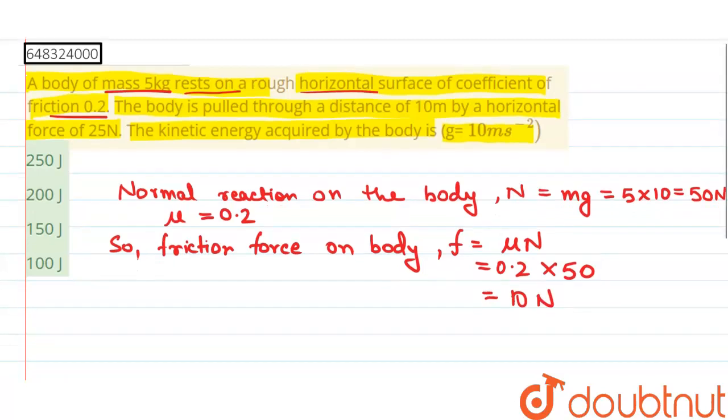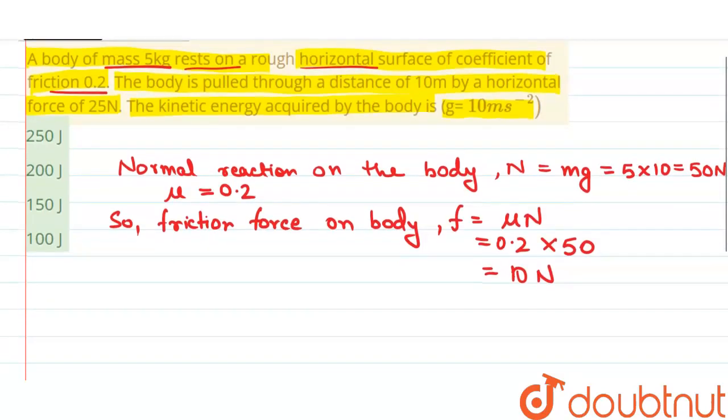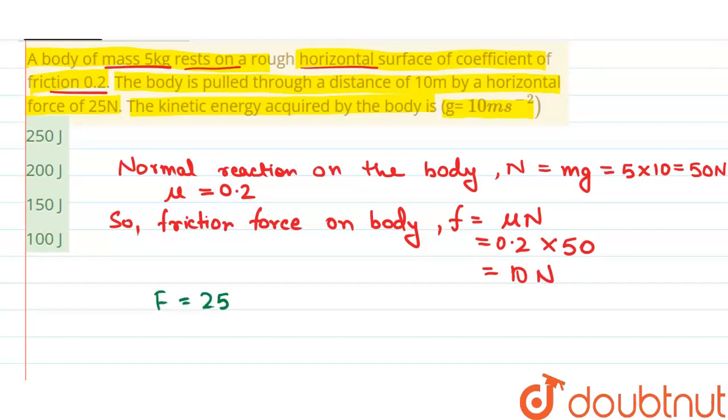So friction force on the body equals 10 newtons and horizontal force is 25 newtons. Therefore, F net, the net force acting on the body, equals 25 minus 10, equals 15 newtons.